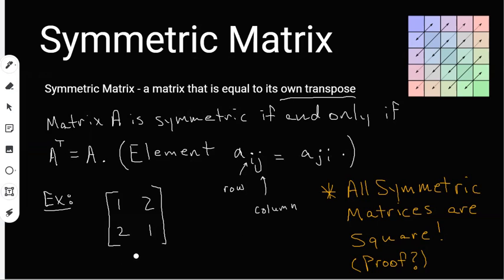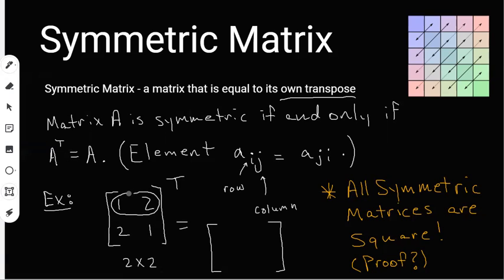With this example, I'm given a two by two matrix and I want to take its transpose. I'll put a capital T as an exponent, which means transpose. The way to take a transpose is to write the rows as the columns. The first row is 1, 2 — that becomes the first column: 1, 2. The second row is 2, 1 — that becomes the second column: 2, 1. Now these two matrices are the same, so this matrix must be a symmetric matrix because the transpose equals the original.